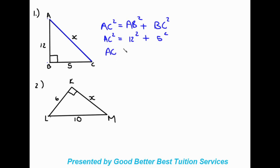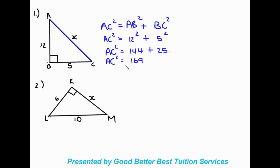Now we work it out. 12 squared gives me 144, plus 5 squared gives me 25. So AC squared equals 144 plus 25, which gives me 169. Now we need to get AC by itself, so we take the square root of AC squared, and we do the same to the other side. So we get AC equals the square root of 169, which equals 13.